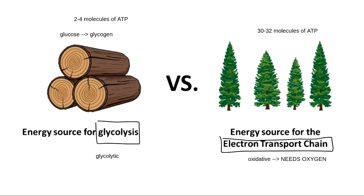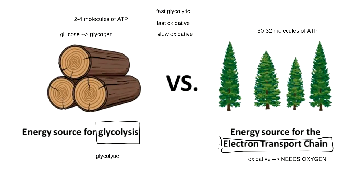So we have three types: fast glycolytic, fast oxidative, and slow oxidative. The naming tells you everything: glycolytic versus oxidative tells you which pathway builds ATP; fast versus slow tells you the ATPase speed and contraction strength. Oxidative fibers are great for endurance or repeated activities. Glycolytic fibers are great for a strong muscle contraction once or a few times.